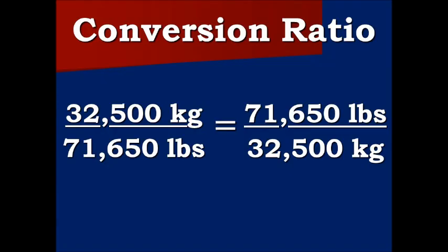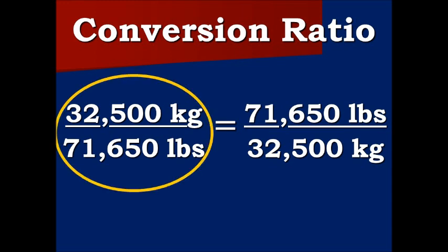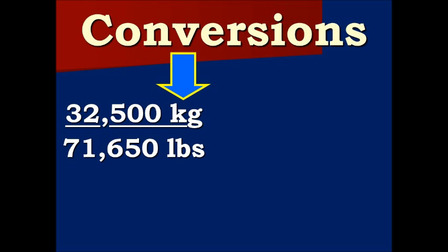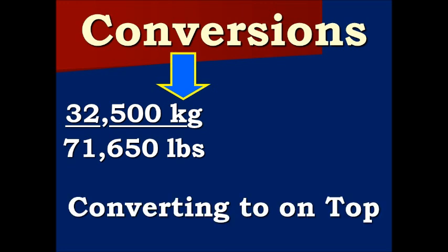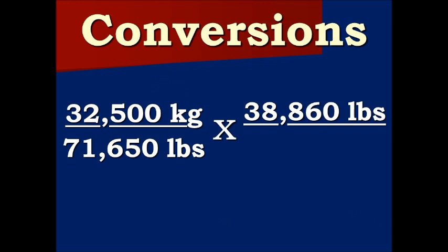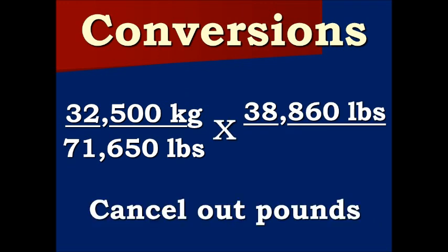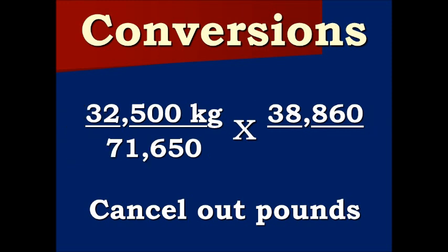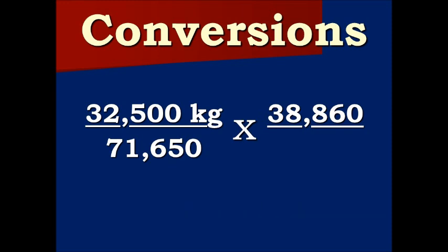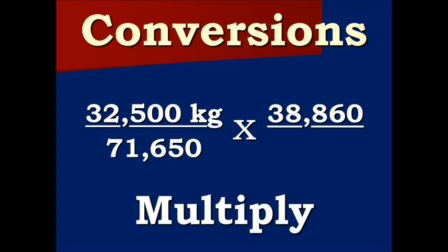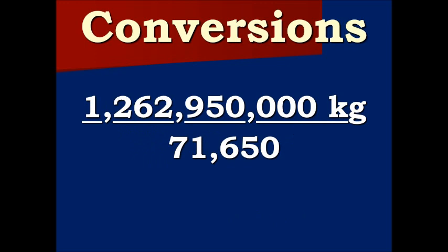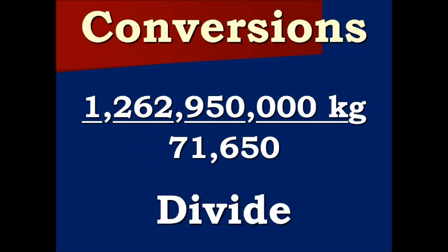Now we are going to convert it back into kilograms to see if you got the concept. Here we have our conversion ratio again. This time we are going to use the one with the kilograms on top because that is what we are converting to. We are going to multiply the 38,860 pounds into our conversion ratio. Again we are trying to cancel out the pounds. Now we are going to multiply that through, and we are going to reduce or divide this fraction.